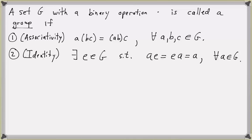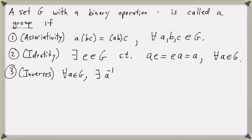Thirdly, every element of G has an inverse. For any element A in G, there exists a unique element called A inverse, which is an element of G, such that A times A inverse equals A inverse times A, which equals the identity. Sets with these three conditions are called groups.